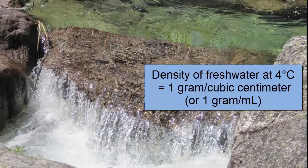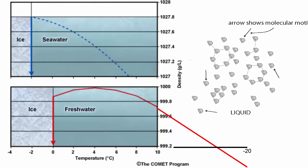Freshwater is the standard against which the density of all other materials are measured. The SI system of units, including grams and liters, was developed around water. The definition of one gram is the amount one cubic centimeter, or one milliliter, of fresh water weighs at four degrees Celsius at sea level.